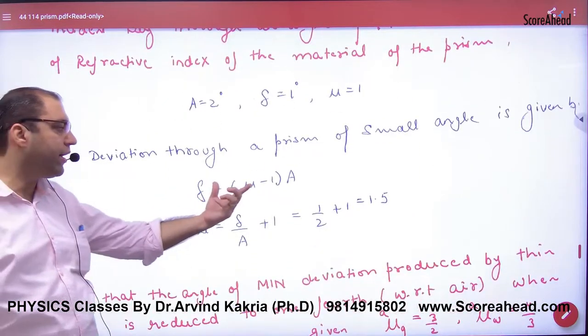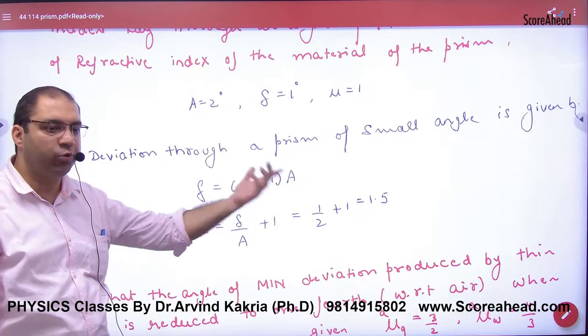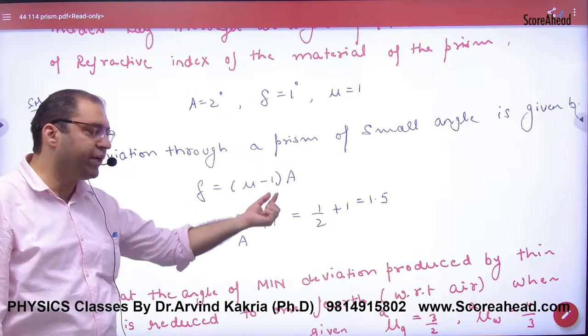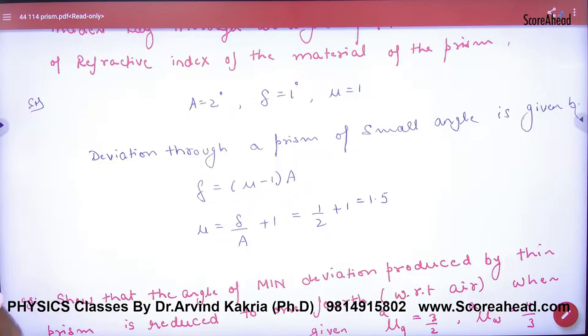So when the angle is small, what would be the formula? Delta equals (μ minus 1) into A. So let's put it. You have to remove μ. Delta and A both know the answer. So this is the formula.